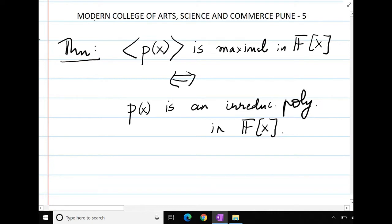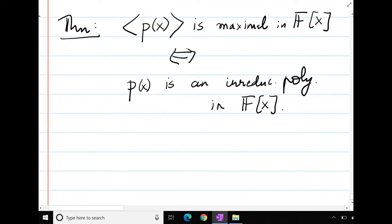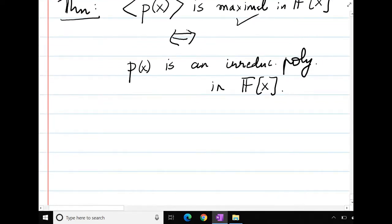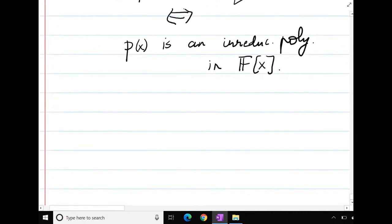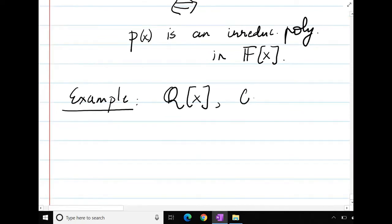So this is one of the important theorems to show how a certain ideal can become a maximal ideal. We will not take the proof, we will take some examples. The proof can be seen from some standard textbook. So what is an example? I am looking in Q[x], we consider a polynomial.